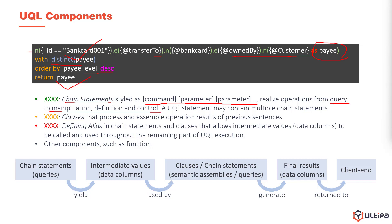A UQL statement may contain multiple chain statements. The rest of the sentences started with keywords in yellow color are clauses. They process and assemble the operation results from previous sentences. Note the preposition 'as' in red color. The function of it is to define alias for values generated by the chain statement and clauses, so this value, also called data columns, can be used in the remaining parts of the UQL.